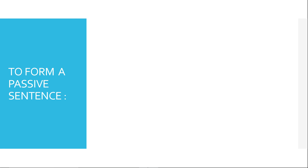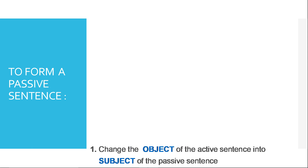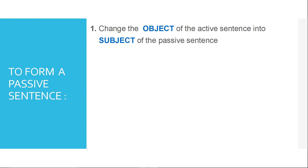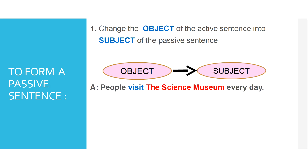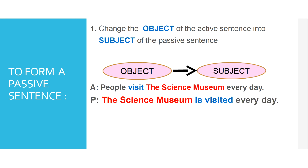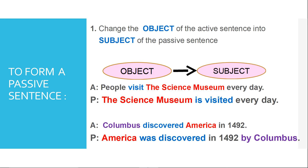So how does this relate to our passive forms? To form a passive sentence, we go through three steps. The first step has to do with these parts of the sentence: we have to change the object of the active sentence into the subject of the passive sentence. Object becomes the subject. For example: 'People visit the science museum every day.' The science museum is the object, so in the passive sentence we begin with it: 'The science museum is visited every day.' Or: 'Columbus discovered America in 1492' — America is the object, so the passive is: 'America was discovered in 1492 by Columbus.'